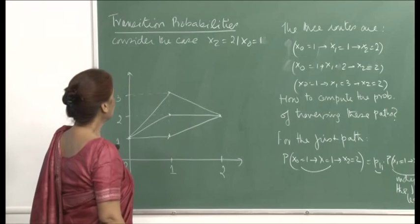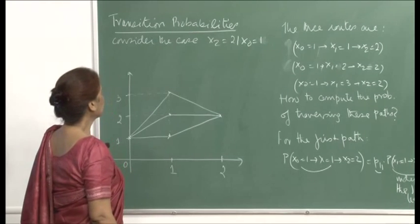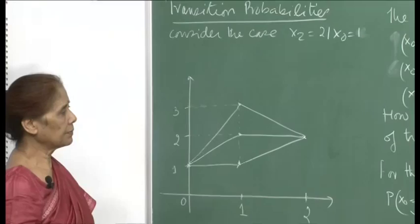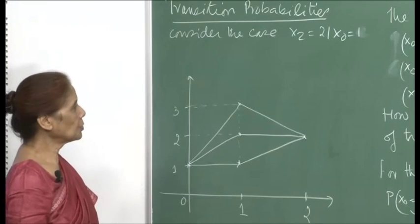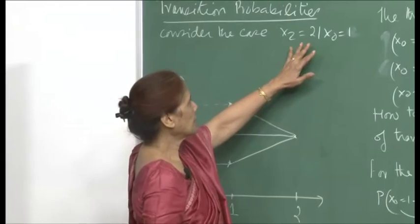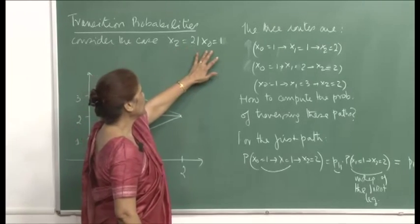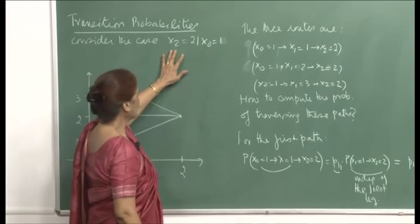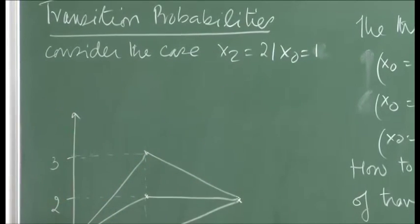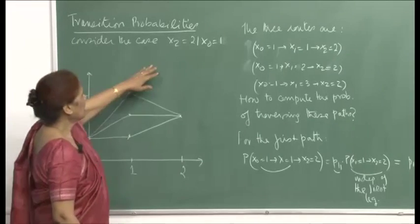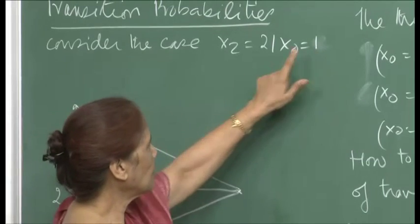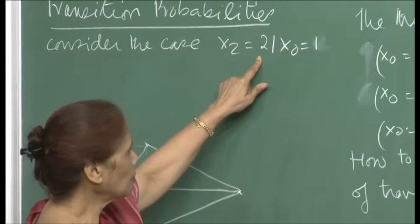I will continue the discussion about computing transition probabilities. I showed you one-step transition probabilities, and we had just started talking about two-step transition probabilities. Consider the case where x₂ equals 1 and x₀ equals 1 from last lecture. Now let us look at x₂ equal to 2 and x₀ equal to 1. In that case, what are the possible routes of transitioning from the initial state 1 to state 2 in two steps?